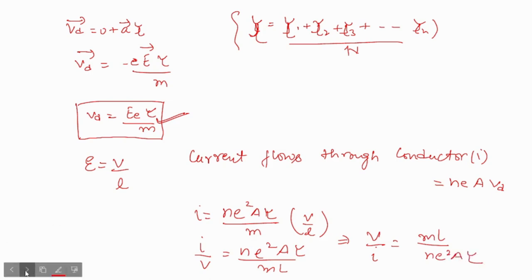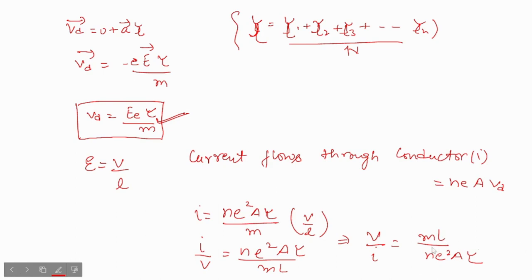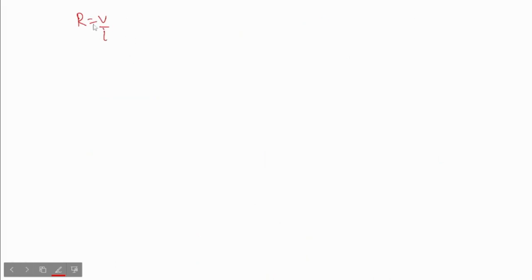If you reciprocate this, then V by I will be mL by ne squared A tau. Now this V by I is resistance. R equals V by I. This term mL by ne squared A tau is a constant, since the physical state of a conductor is constant. Mass, length, n, cross-sectional area A, and tau all remain constant. From here R equals mL by ne squared A tau. This is Ohm's law.